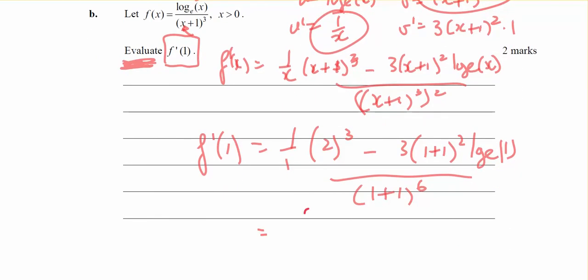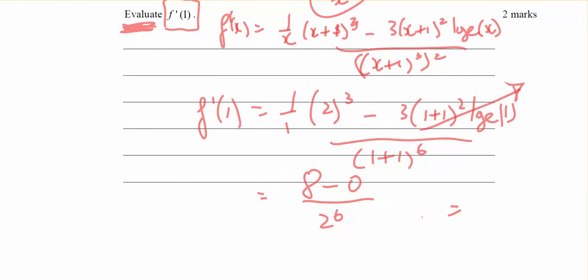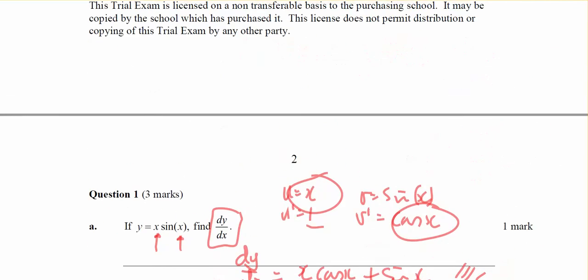So that's equal to 8 minus that's all 0 because log base e of 1 is 0, all over 2 to the power of 6. So I've really got 2 to the power of 3 over 2 to the power of 6, which is going to be 1 over 2 to the power of 3, or 1 eighth is going to be the final answer. So that's the answer to question number 1.